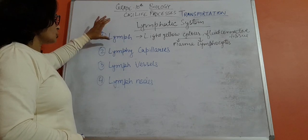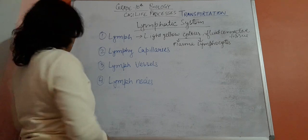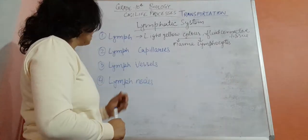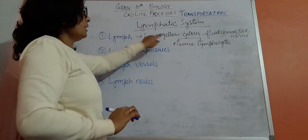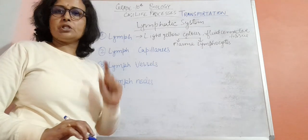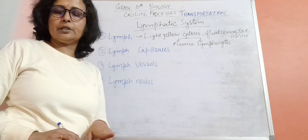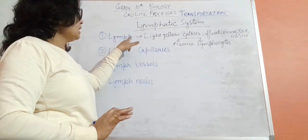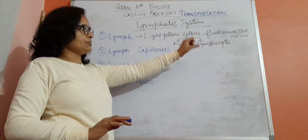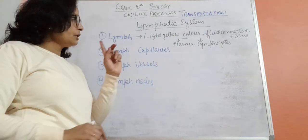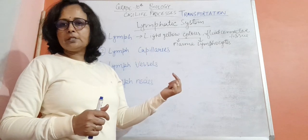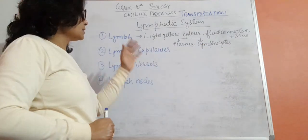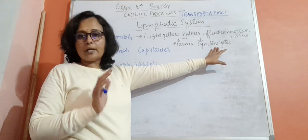The lymphatic system has four parts: first is lymph, second is lymph capillaries, third is lymph vessels, and fourth is lymph nodes. Lymph is a light yellow colored fluid connective tissue, similar to blood which is also a fluid connective tissue. Lymph is composed of two parts: plasma and lymphocytes. Blood has plasma and blood cells, while lymph has plasma and lymphocytes.